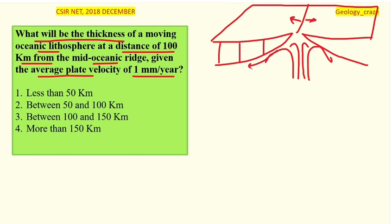The convection current brings up the hottest material, which creates the new plate and pushes the plates away from each other. As the material cools and moves along, it increases the thickness of the plate. At distance d1, thickness is this much; at distance d2, thickness is greater; and at d3, thickness is even greater.